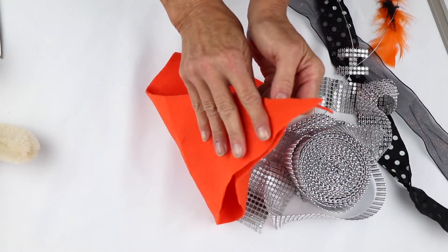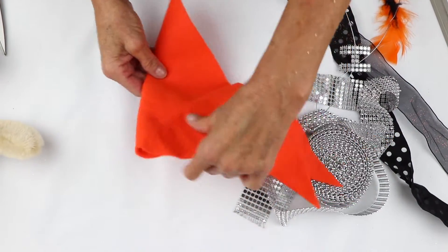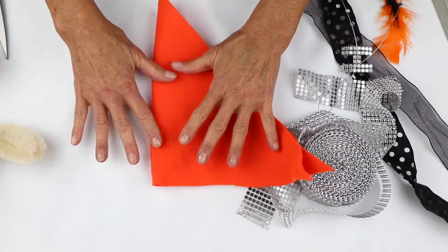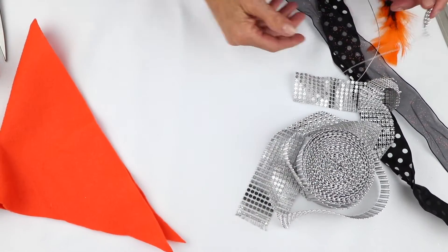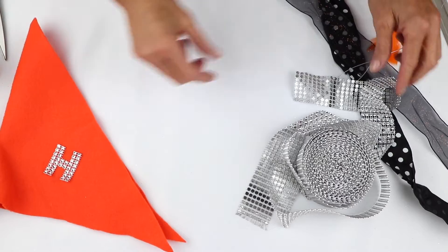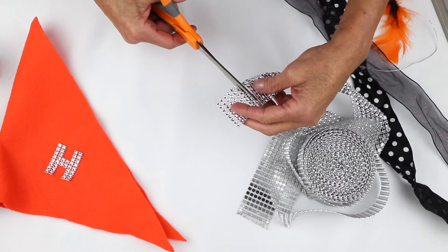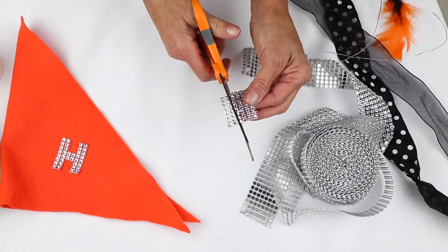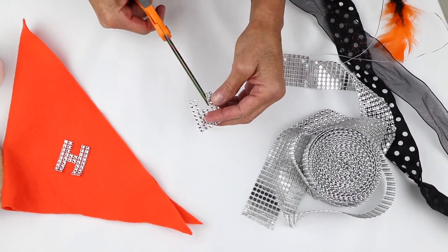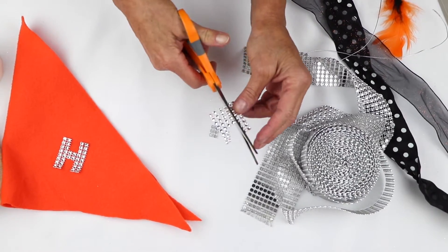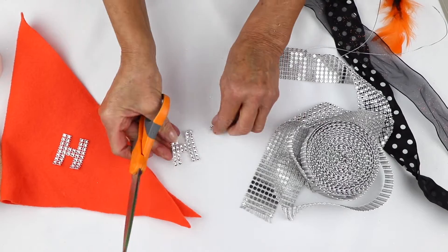And then what I'm going to do is fold my triangle in half so that I know that when I place the things on it, it's going to be even. So the first thing that I'm going to do, I've already cut one each. And now I'm going to cut another one from our Bowdabra rhinestone mesh. And now I have my H.